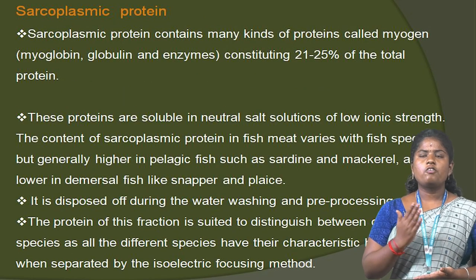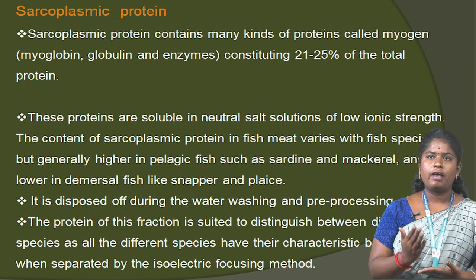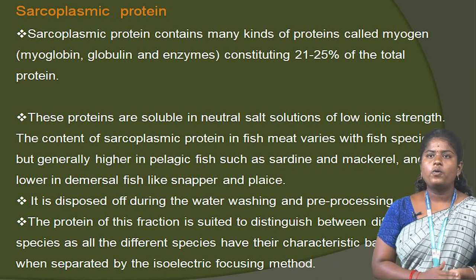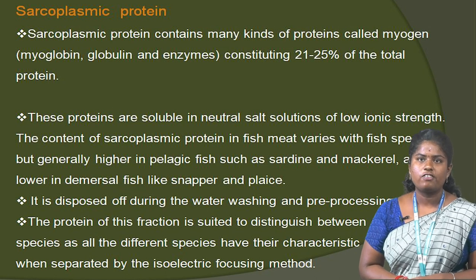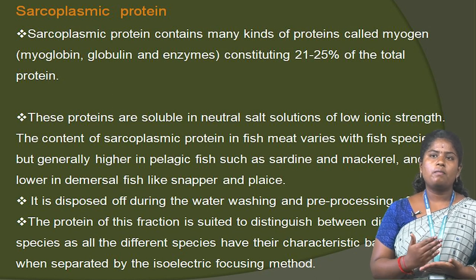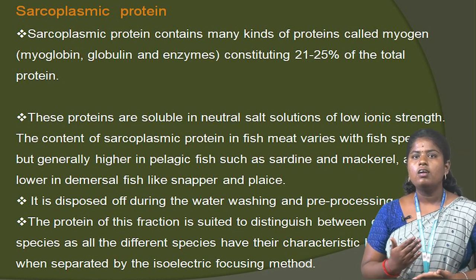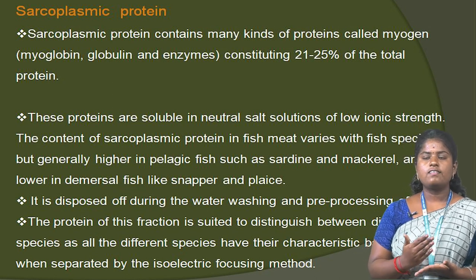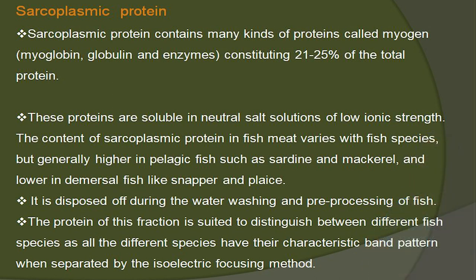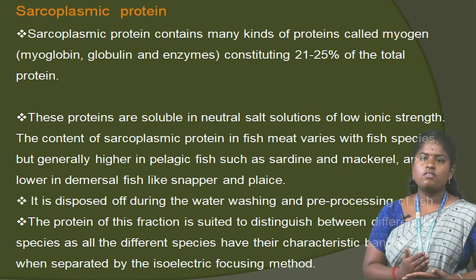Sarcoplasmic proteins contain many kinds of proteins called myogen, constituting 21 to 25% of the total protein. These proteins are soluble in neutral salt solution of low ionic strength. The content of sarcoplasmic protein in fish meat varies with the fish species, but is generally higher in pelagic fish like sardine and mackerel, and lower in demersal fish like snapper and plaice. It is deposited during water washing and pre-processing of fish. The proteins of this fraction are suited to distinguishing between different fish species, as all different species have a characteristic band pattern when separated by isoelectric focusing.